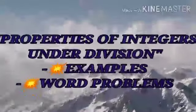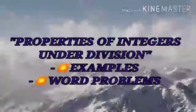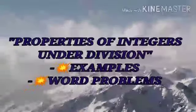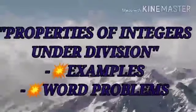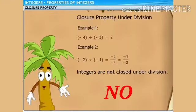Now we are going to see about properties of division of integers. The properties — closure, commutative, and associative — do not hold for the operation of division. For closure property: when two integers undergo an operation and give an integer as result, that is closure property. Minus 4 divided by minus 2 gives 2, which is an integer. But minus 2 divided by minus 4 gives 1/2, which is not an integer. Clearly, integers are not closed under division.